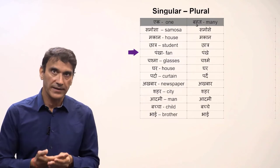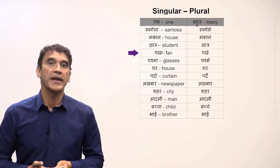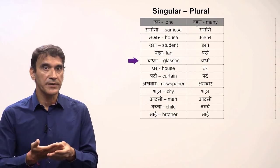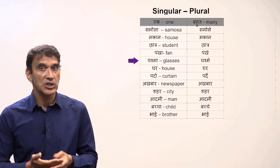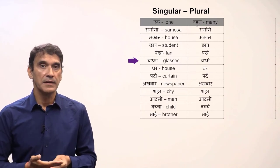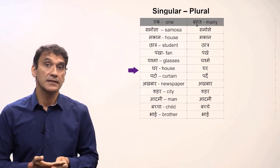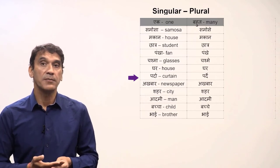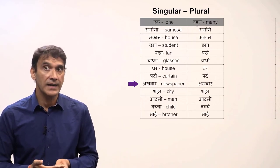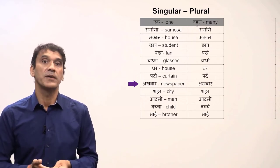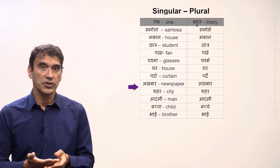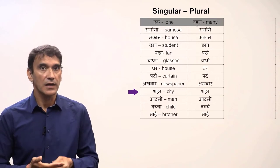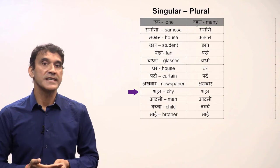Pankhaa meaning 'a fan' ends in 'a', so it changes to 'e' in plural — 'pankhe' meaning fans. 'Chashma' meaning 'a pair of glasses' — the plural is 'chashmey' meaning pairs of glasses.